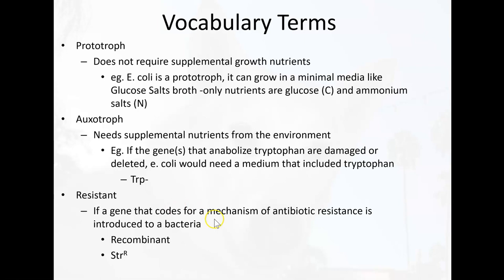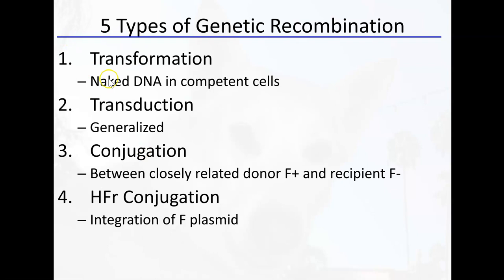In this lecture I'll probably just cover the first topic in this first video — I'm trying to chop these videos into smaller pieces so they're easier to digest. The first one I'm going to cover is transformation. In this lecture we're going to go over really three major types of genetic recombination: transformation, transduction, and then two different variations on conjugation.